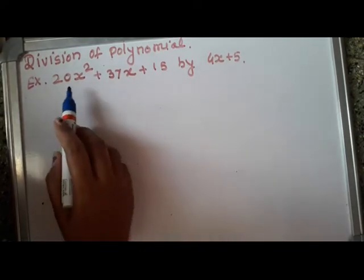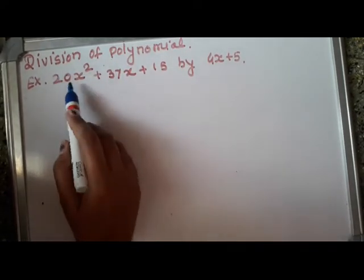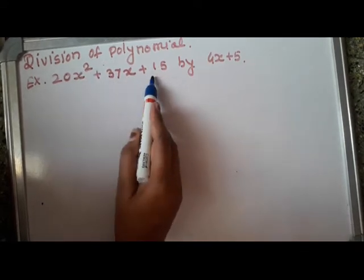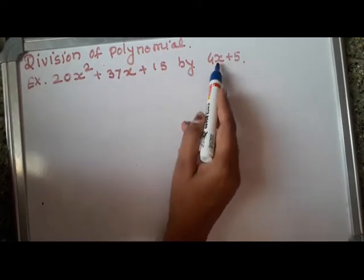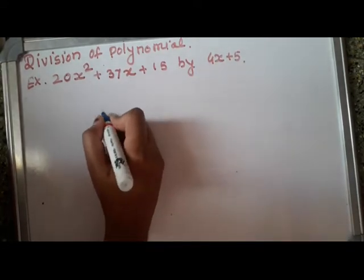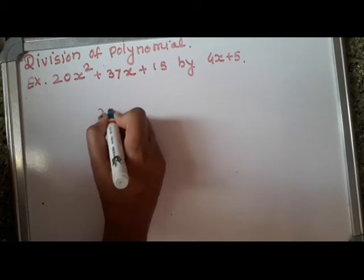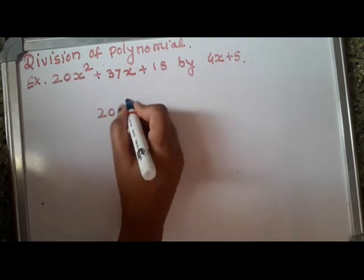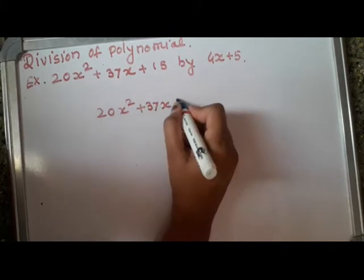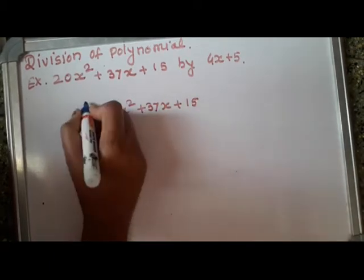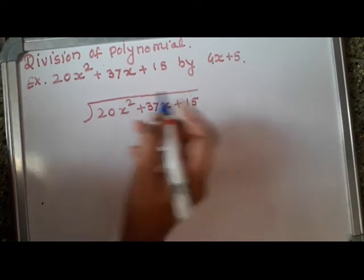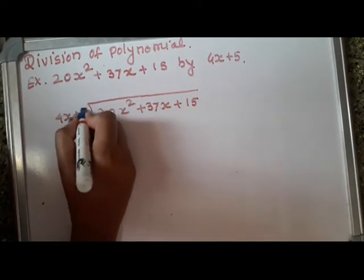See the example of division of polynomial 20x square plus 37x plus 15 by 4x plus 5. We will do it by division method, long division method. 20x square plus 37x plus 15 divided by 4x plus 5.